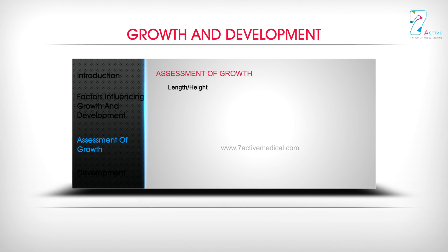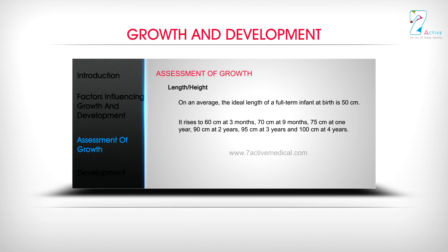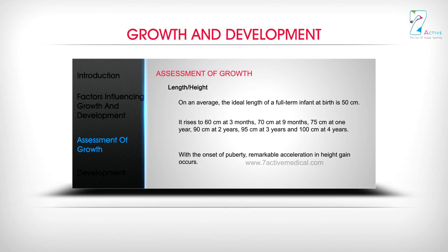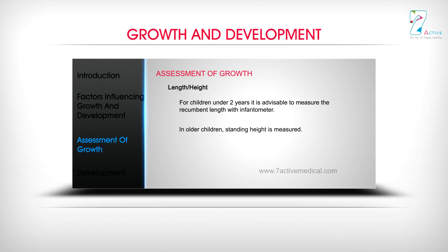Length or Height: On an average, the ideal length for a full-term infant at birth is 50 cm. It rises to 60 cm at 3 months, 70 cm at 9 months, 75 cm at 1 year, 90 cm at 2 years, 95 cm at 3 years, and 100 cm at 4 years. With the onset of puberty, remarkable acceleration in height gain occurs. For children under 2 years, it is advisable to measure the recumbent length with an infantometer. In older children, standing height is measured.